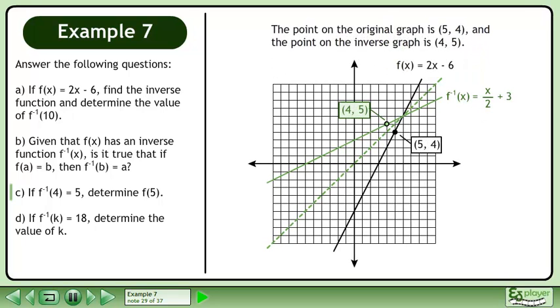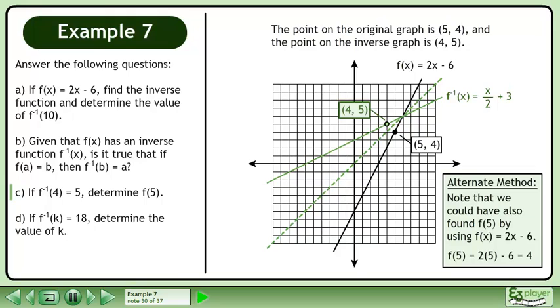If we bring up the graph, we can see both points. Note that we could have also found f at 5 by using f of x equals 2x minus 6.